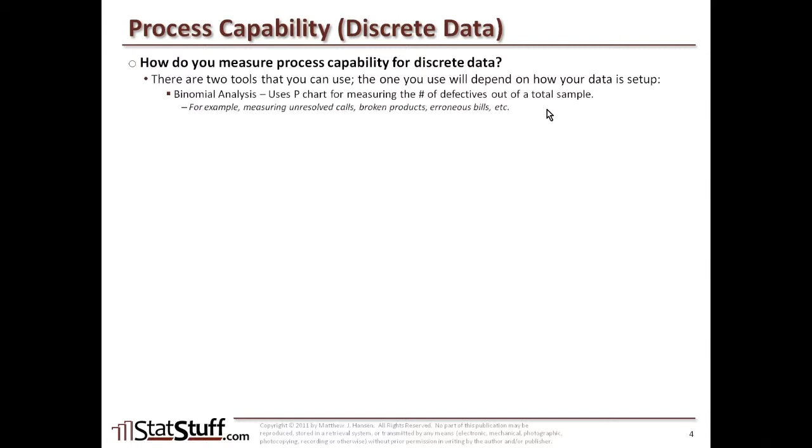The first one you can use is the binomial analysis. This is going to be using a p-chart for measuring the number of defectives out of a total sample. If you have an example of data like measuring the number of unresolved calls, or broken products, or number of erroneous bills, that's where you're going to use this binomial type of analysis. However, you might use the Poisson analysis, which uses the u-chart if you're going to be measuring the number of defects per unit. This would be an example if you're measuring the number of errors a phone rep may have made per call, or maybe the number of errors that are appearing on each bill. It's those kinds of things where you might prefer to use the u-chart, which is utilized by the Poisson analysis.